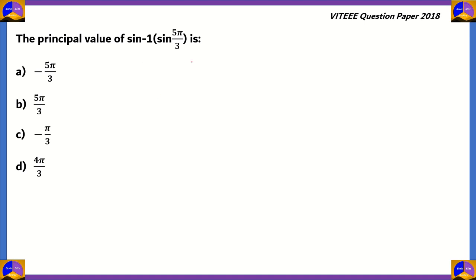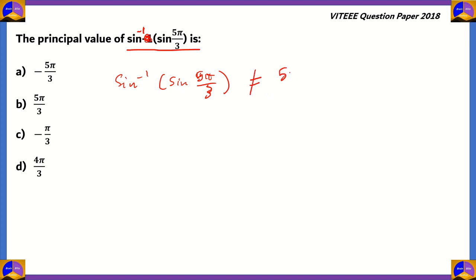Now let's look at the next question: find the principal value of sin⁻¹(sin(5π/3)). In most cases when you have an inverse trigonometric function enclosing a trigonometric function, both functions cancel and the angle inside is the answer. But in this case the answer is not 5π/3, because 5π/3 does not belong to the range of the sine inverse function.